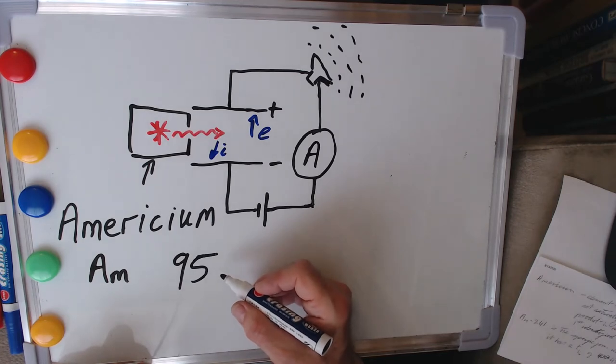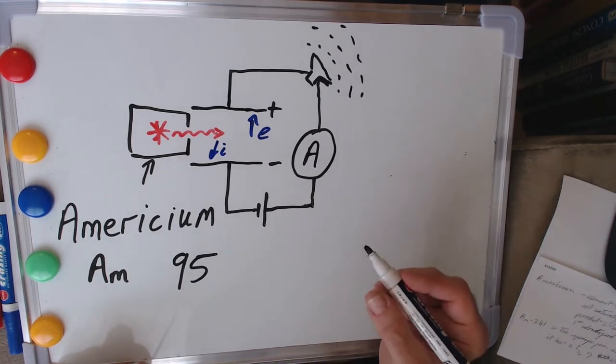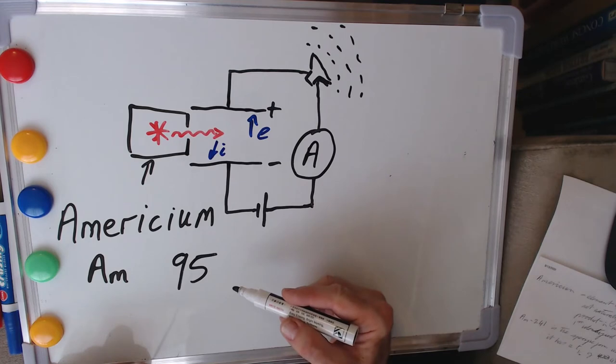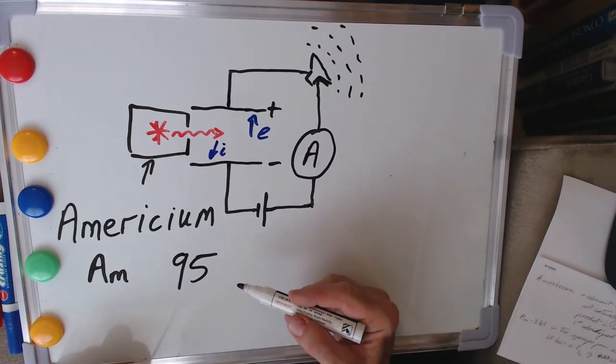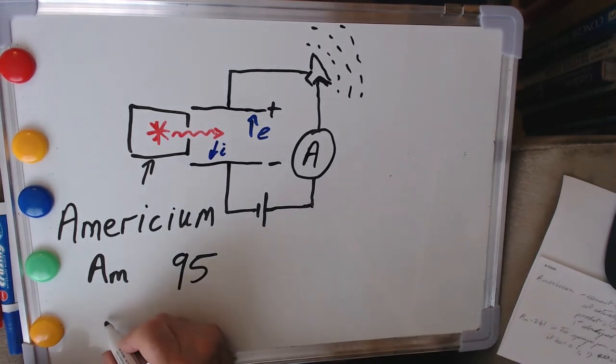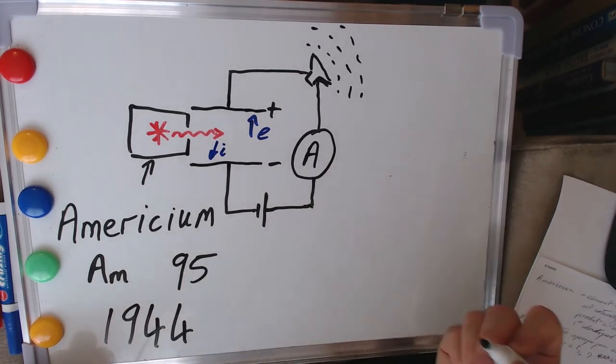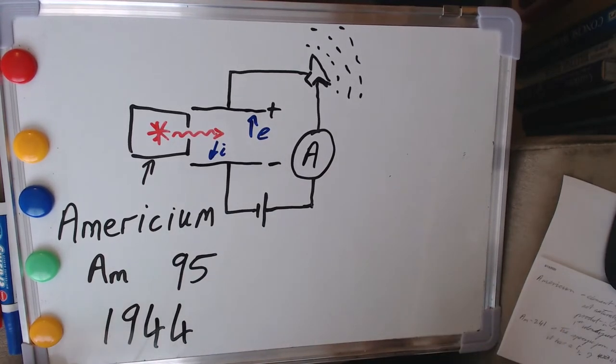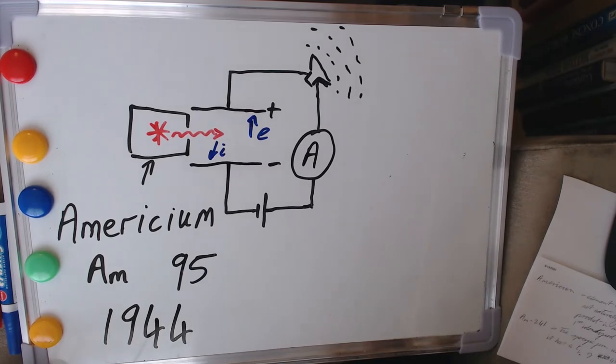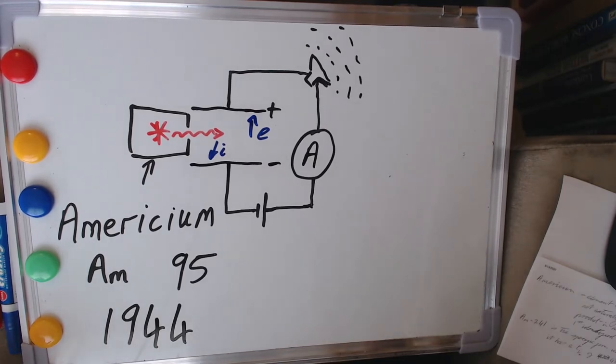So americium is actually made as a byproduct in nuclear reactors. And it was first identified as a new element in 1944. So it's been around through our lifetimes essentially.